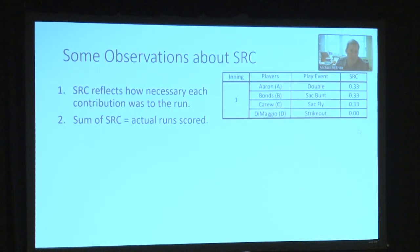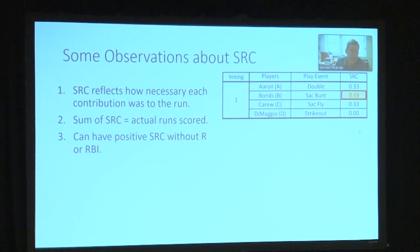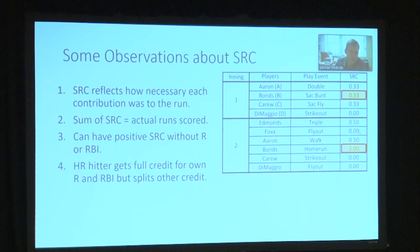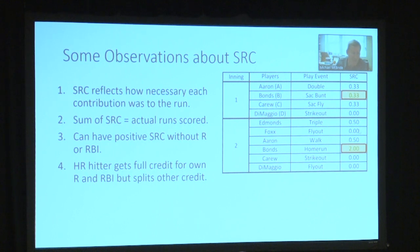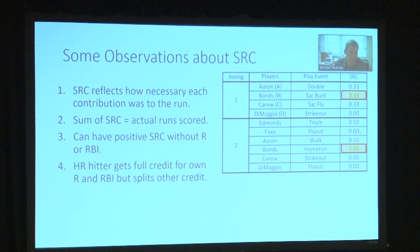Some other observations: it reflects how necessary each contribution was to the run. The efficiency property means the total runs scored equals the total credit allocated. You can have a positive SRC without a run or RBI — Bonds' sacrifice bunt moved the runner and was key to the run scoring, so he received credit. A home run hitter receives full credit for his own run scored, but splits credit for the other RBIs in that home run.